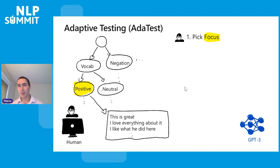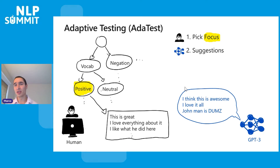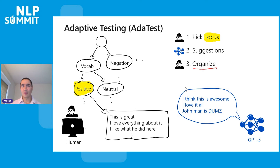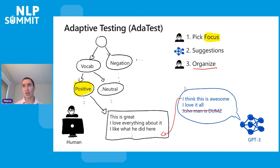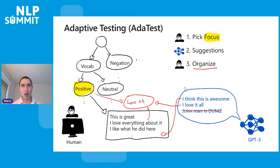The next step is GPT-3 generates suggestions based on those initial examples. GPT-3 comes back and says, look, I have these tests, I'm going to generate some more that are similar. Some of what GPT-3 generates is good, some of it is not going to be meaningful or relevant, and some of it is going to be nonsense. Third step: the user organizes the suggestions GPT-3 brought in. If you're looking at clear positive examples, maybe the first suggestion gets added to the current topic. Maybe another one gets discarded as junk. And maybe you take a third suggestion and create a new sub-topic under positives.